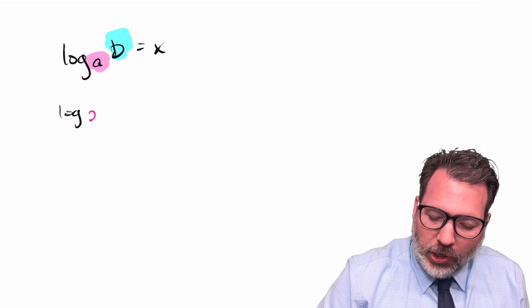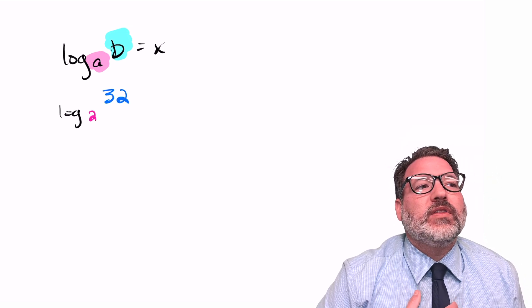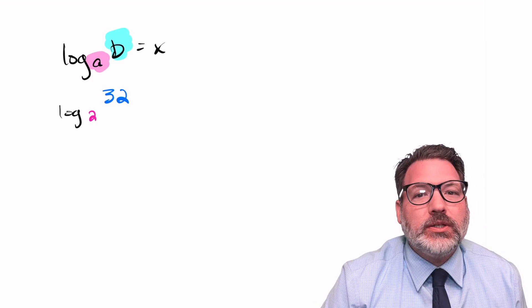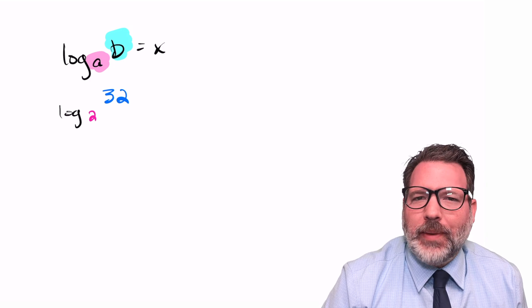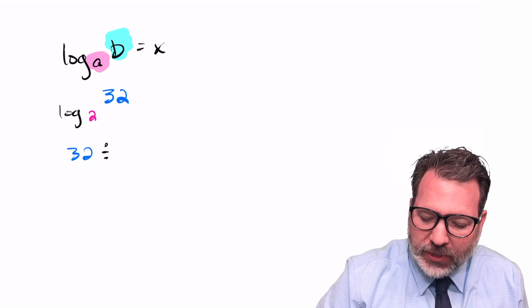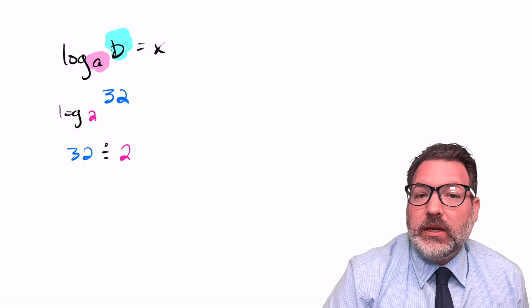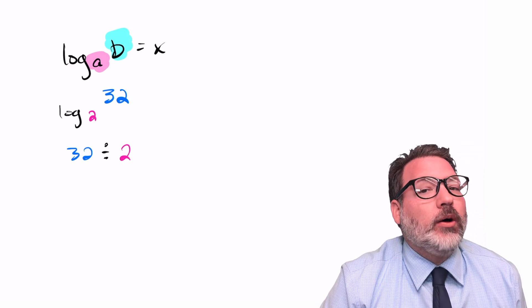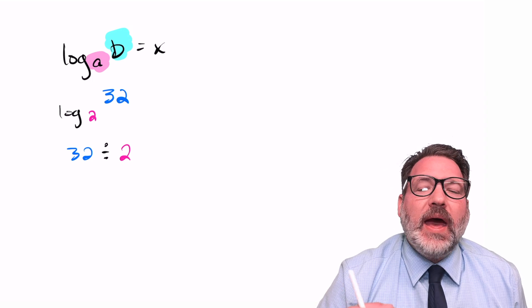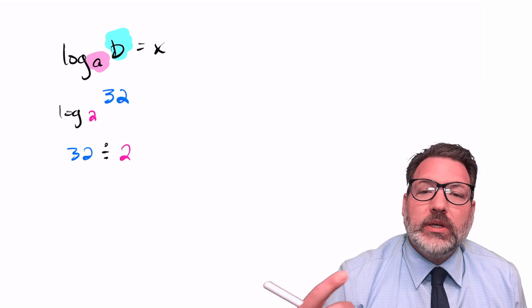If I wanted to take something like the logarithm base 2 of 32, and I wanted to think of this as an operation, what's the question that I'm answering? Division, you'll recall, answers this question. When we write something like 32 divided by 2, we'll often say, how many times does 2 go into 32? And you probably already know that answer is 16. But when we say that, what we mean is that if you added a 2 to itself 16 times, you would get back 32.